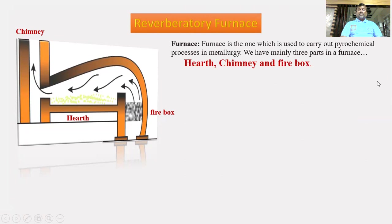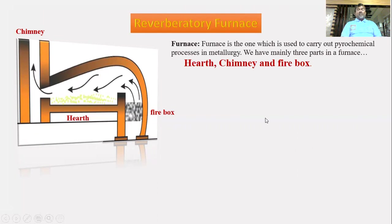A furnace is used to carry out pyrochemical processes in metallurgy. The three main parts in both the reverberatory and blast furnace are: the firebox, where the fire is burned and heat is released; the chimney, used to liberate waste gases; and the hearth, which is the place where the ore is kept.